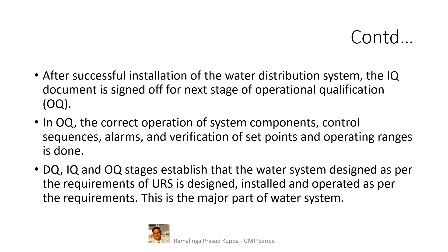DQ, IQ, and OQ stages establish that the water system designed as per the requirements of URS is designed, installed, and operated as per the requirements. This is the major part of the water system and is the first goal of water system validation — the system is now ready to take off.